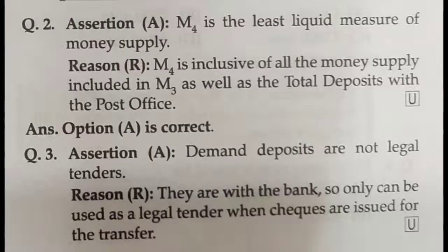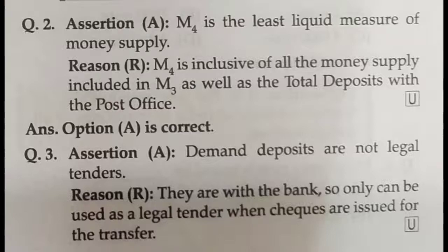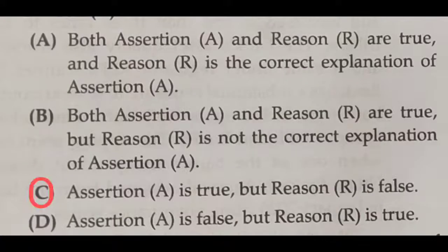Assertion-reason question number three. Assertion A: demand deposits are not legal tenders — that assertion is true. Reason R: they are with the bank and can only be used as legal tender when checks are issued for transfer — that reason is false. So assertion is true but reason is false — tick option C.